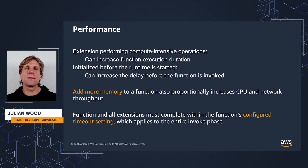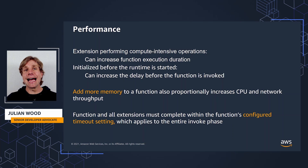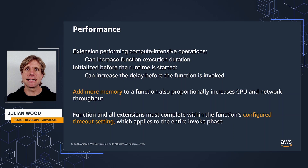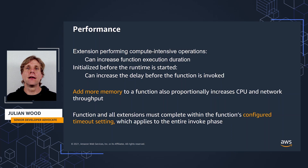Looking at performance, there are a few things to bear in mind. Extensions can impact performance because they share function resources such as CPU, memory, and storage. For example, if an extension performs compute-intensive operations, your function's execution duration may increase. Extensions must also finish initialization before Lambda invokes the function, so an extension with a longer initialization time can add latency. You can add more memory to a function, which proportionally adds CPU and network throughput, if your extension requires more resources.